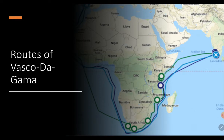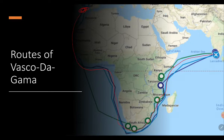Now let's look at the route of Vasco da Gama. Starting from Portugal, he came through this route all the way to India, specifically to the port of Calicut.